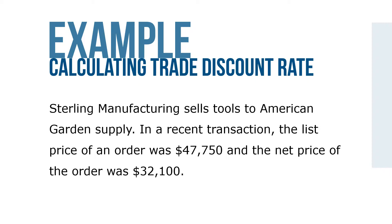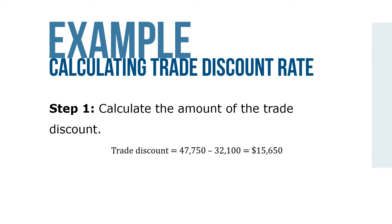Here's an example. Sterling Manufacturing sells tools to American Garden Supply. In a recent transaction, the list price of an order was $47,750, and the net price of the order was $32,100. Step 1: Calculate the amount of the trade discount, which equals $47,750 minus $32,100, for a total trade discount of $15,650.